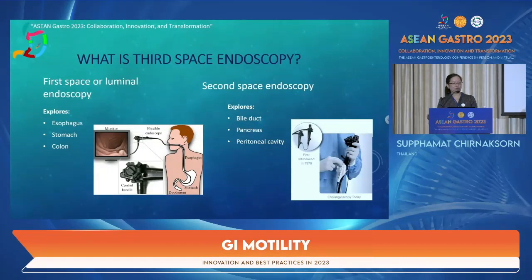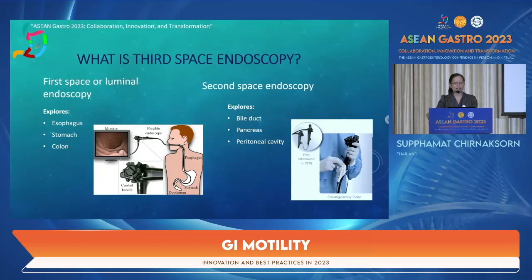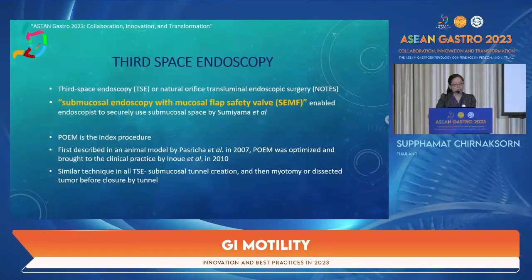As we may know, luminal endoscopy which examines the esophagus, stomach, and colon is called first-space endoscopy. The smaller space such as bile duct and pancreas, where endoscopy is used to see the organ, is called second-space endoscopy. The submucosal or third space is a virtual space between the mucosa and the muscular layer, accessible by endoscopy using injectable solution — this is called third-space endoscopy.